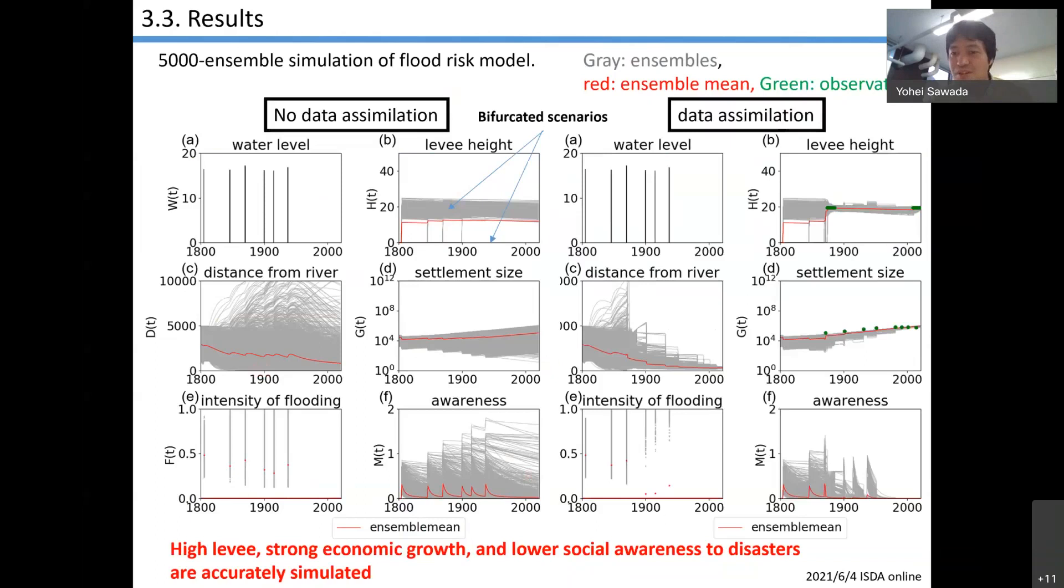When we assimilate the observation, levee height observation and population observation, we can efficiently constrain the model trajectory very well. In the real world, Rome constructed very high levees in the 1870s. They can protect the city and continue economic growth or stable growth. But they forgot about the flood, maybe. And their city is located relatively near the flood plain. Highly strong economic growth and lower social awareness to disasters are accurately simulated by assimilating really few number of observations. It looks promising.